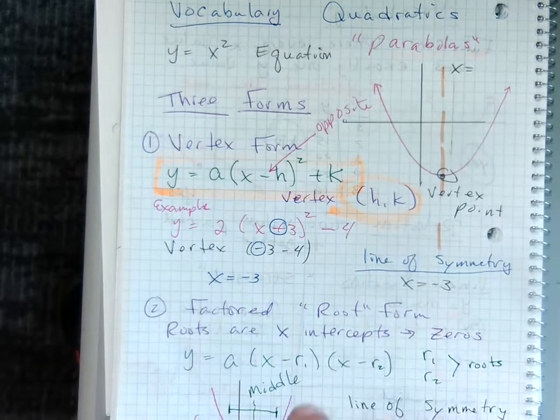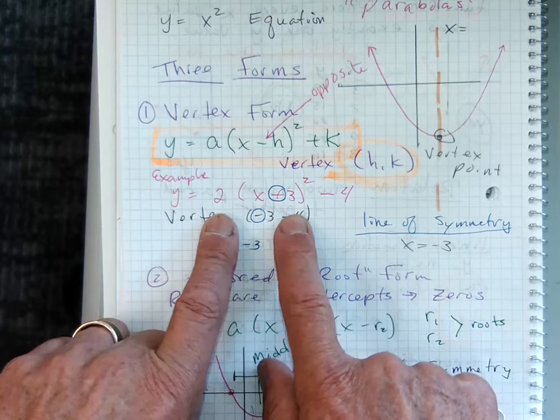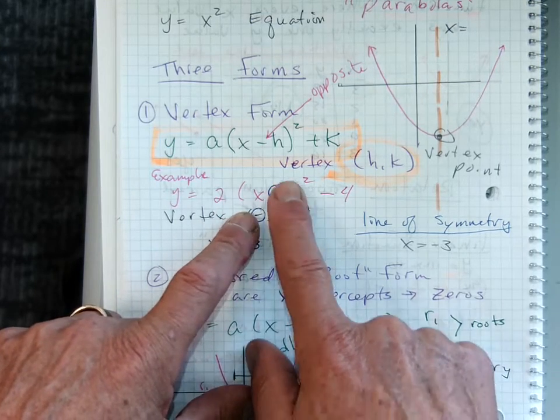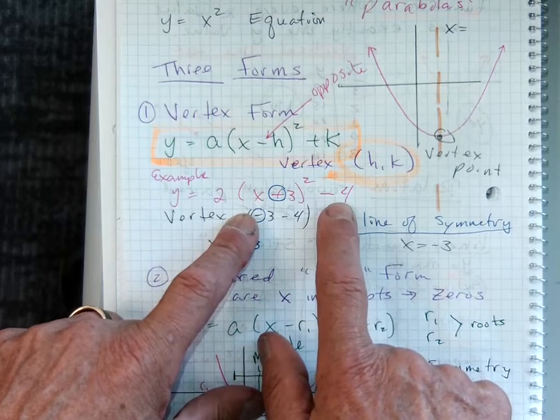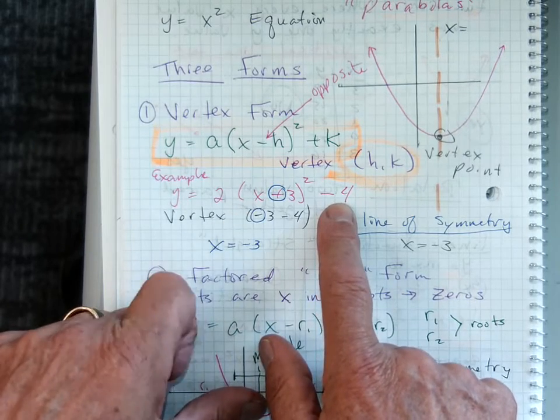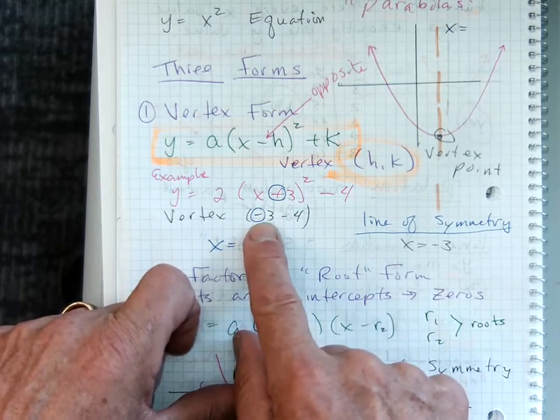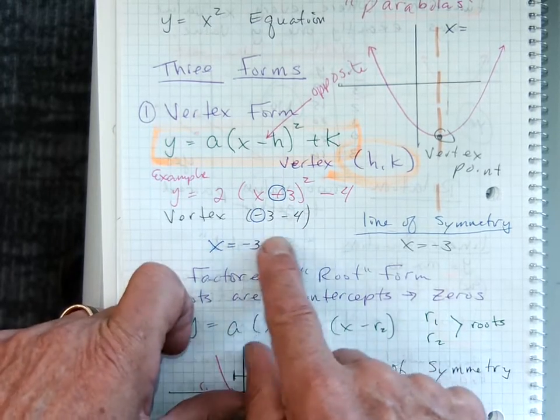So as an example, I showed the kids this example. Y equals two, parentheses, x plus three, quantity squared minus four. The vertex would be at opposite, opposite of this one. So it would be a negative three and a negative four. So that's the vertex.